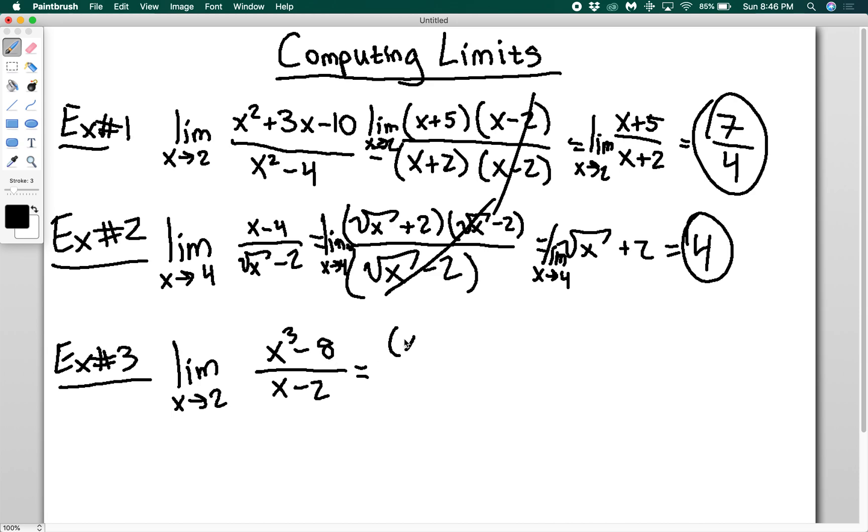You have to remember how to factor a difference of cubes. This is going to give you x minus 2 times x squared plus 2x plus 4 divided by x minus 2. Now these will cancel out. I can plug in 2 into this equation and I get 12, so that would be my limit there.